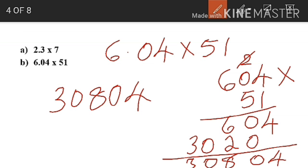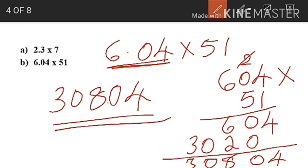Now let us count the number of digits after the decimal point in the multiplicand. The multiplicand is 6.04 — there are 2 digits after the decimal point. So we will put the decimal point after 2 digits from the right, between 8 and 0. So this will be 308.04. This is how we multiply a whole number and a decimal.